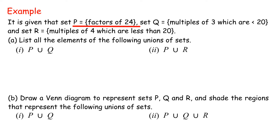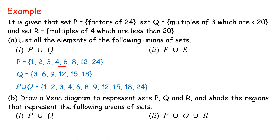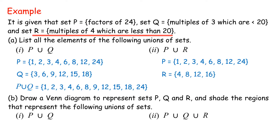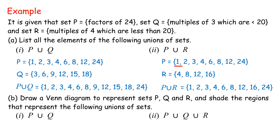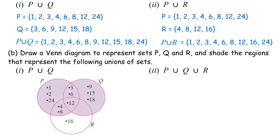Solution. Part A. 1. P union Q: P = {1, 2, 3, 4, 6, 8, 12, 24}, Q = {3, 6, 9, 12, 15, 18}. P union Q = {1, 2, 3, 4, 6, 8, 9, 12, 15, 18, 24}. 2. P union R: P = {1, 2, 3, 4, 6, 8, 12, 24}, R = {4, 8, 12, 16}. P union R = {1, 2, 3, 4, 6, 8, 12, 16, 24}. Part B: Venn diagram shading shown for items 1 and 2.